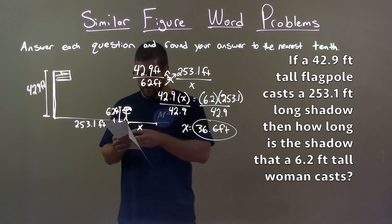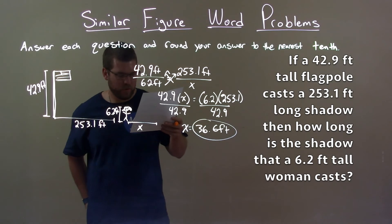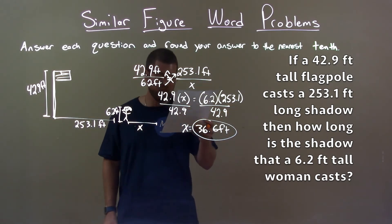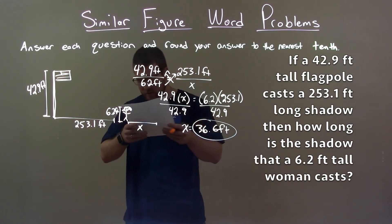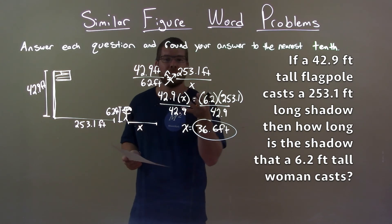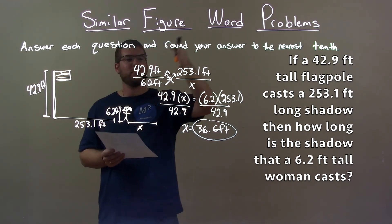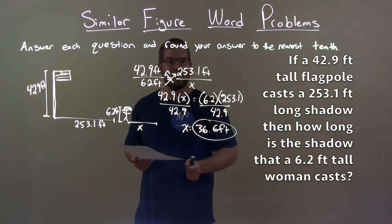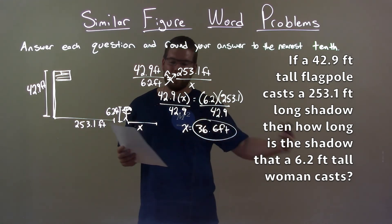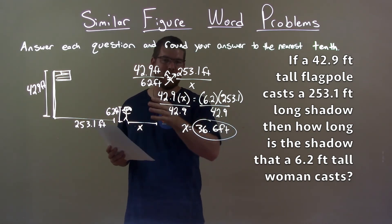Quick recap. If a 42.9 foot tall flagpole casts a 253.1 foot long shadow, then how long is the shadow that a 6.2 foot tall woman casts? We draw our diagram, create a proportion between height and shadow length, then solve for the missing variable x. That came out to be 36.6 feet, which is the length of the shadow the woman casts.